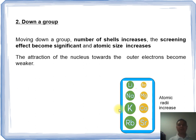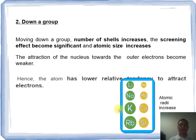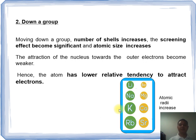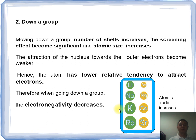The attraction of the nucleus towards the outer electrons becomes weaker. Hence, the atom has lower relative tendency to attract electrons. Therefore, when going down a group, the electronegativity decreases.